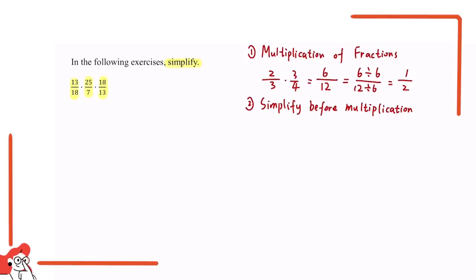Alright, welcome back. Now let's do this question together. First of all we're going to copy the question. So 13 divided by 18 times 25 over 7 times 18 over 13.